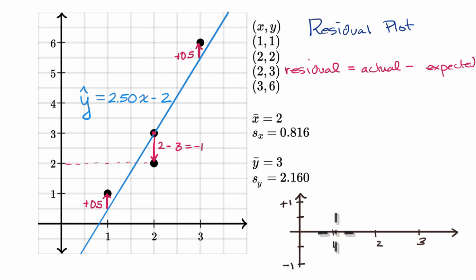And so when x equals one, what was the residual? Well, the actual was one, expected was 0.5. One minus 0.5 is 0.5. So this right over here, we can plot right over here. The residual is 0.5.